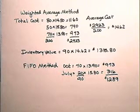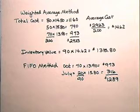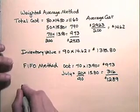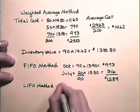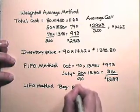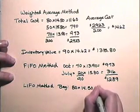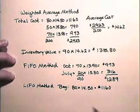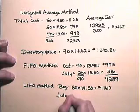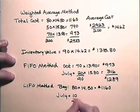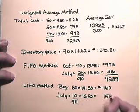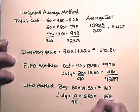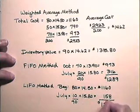Now let's determine the inventory value by using the LIFO method. The LIFO method assumes last in, first out. In other words, the goods remaining in inventory are those that were purchased first. So by the LIFO method, we have the beginning inventory, which is 80 units at $14.50, or $1,160. And we also have 10 of those purchased in July — 10 units at $15.80 each — which gives us $158, and adds up to our 90 units. So by the LIFO method, the value of our inventory is $1,318.